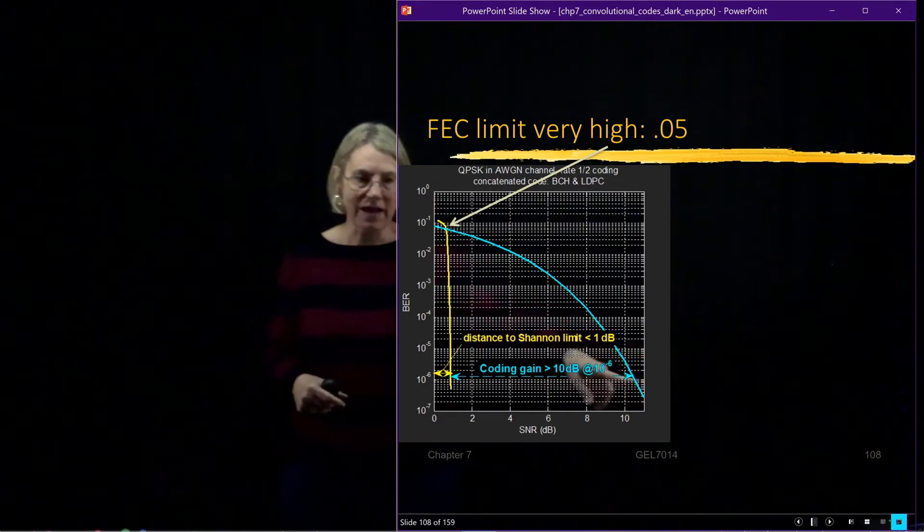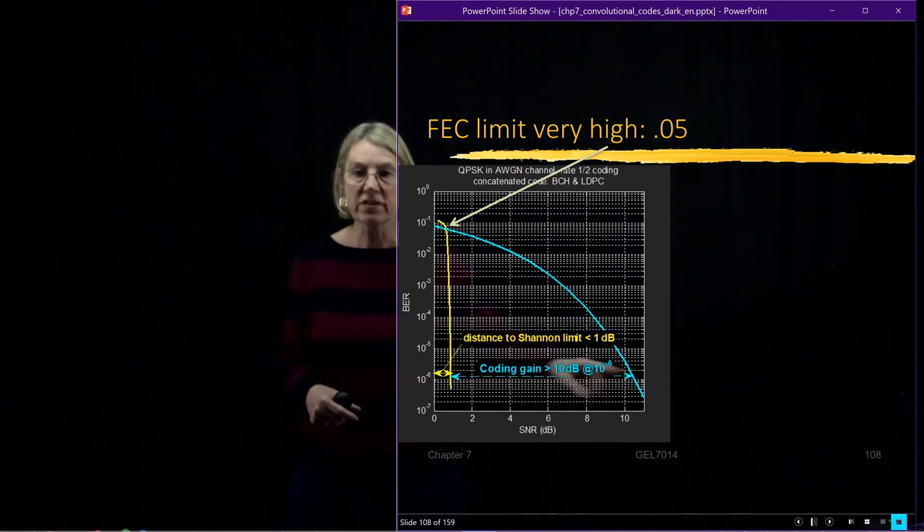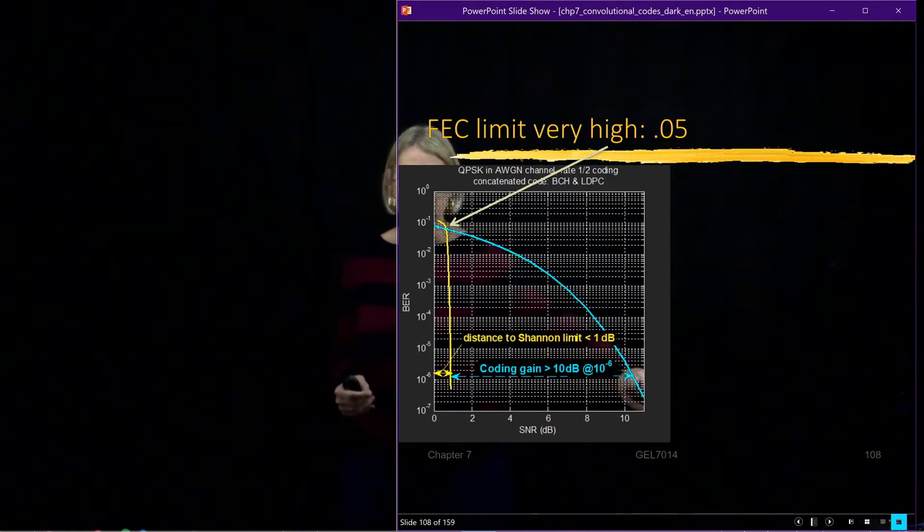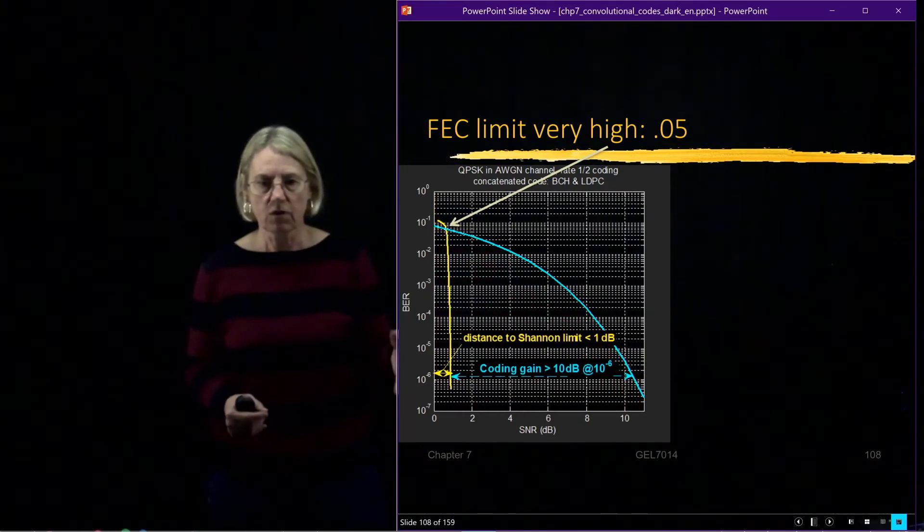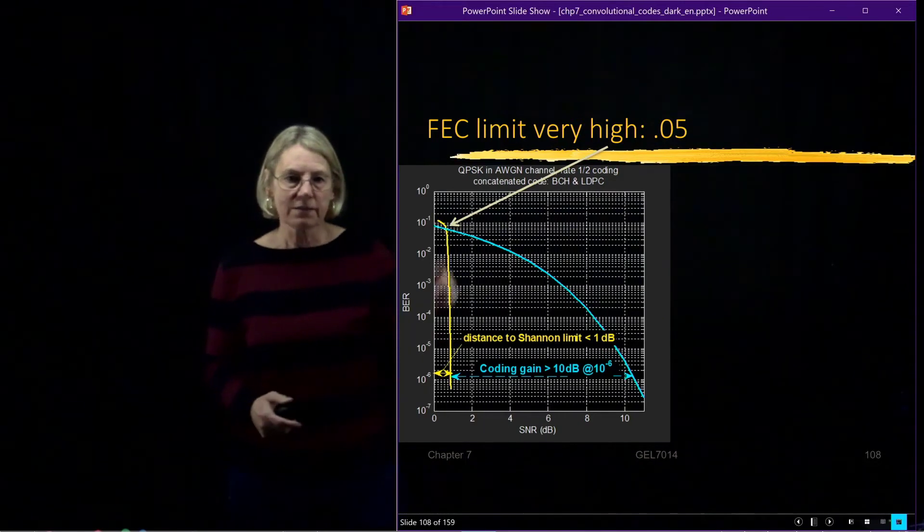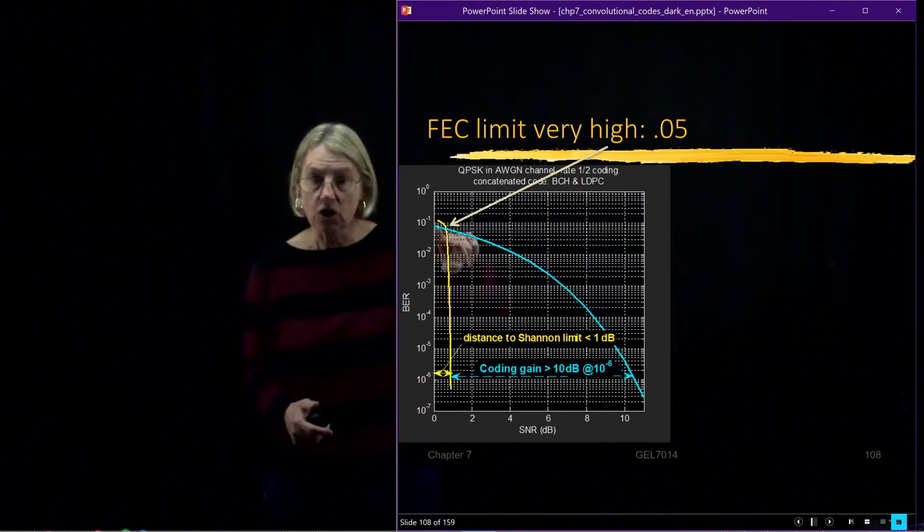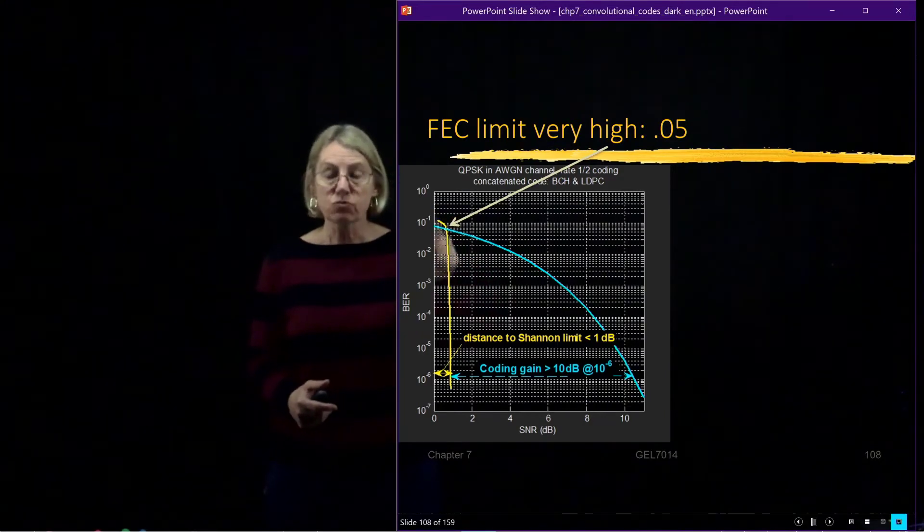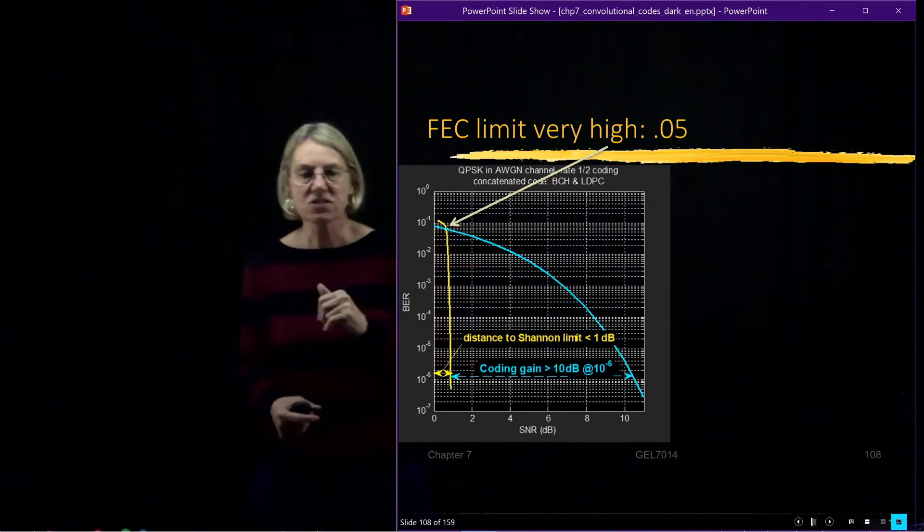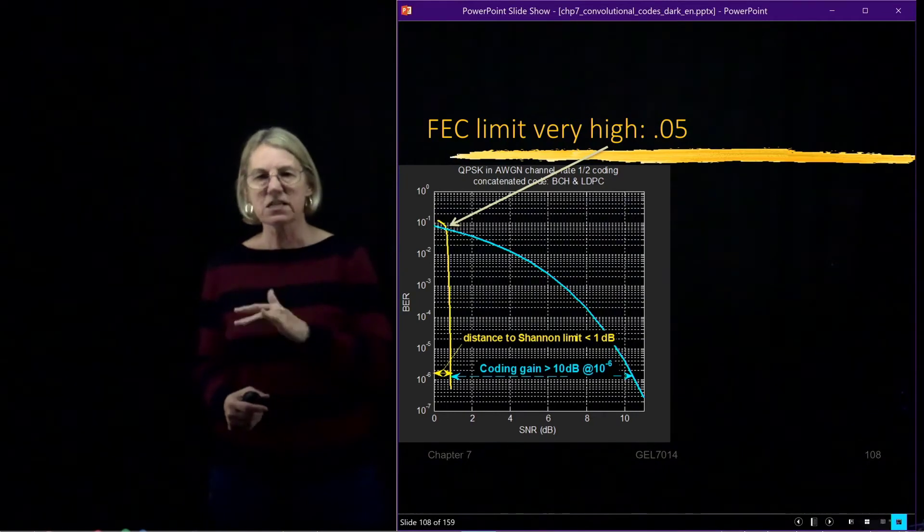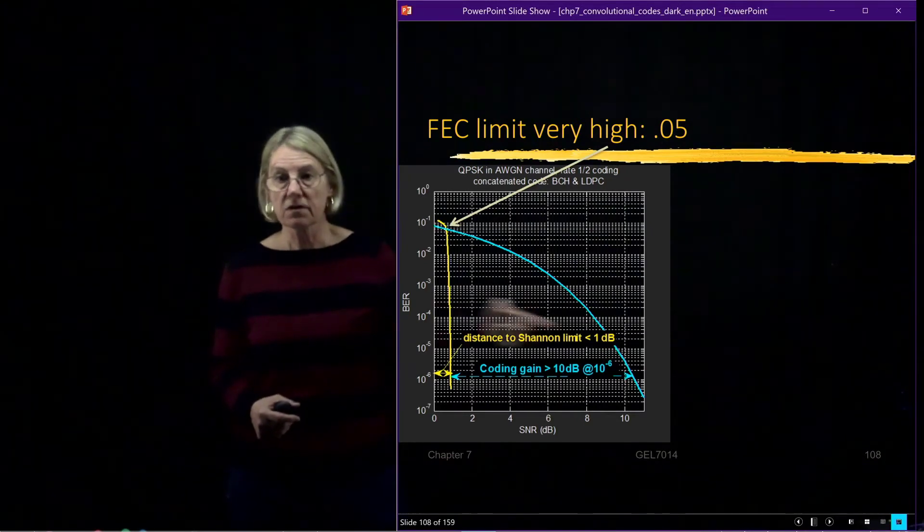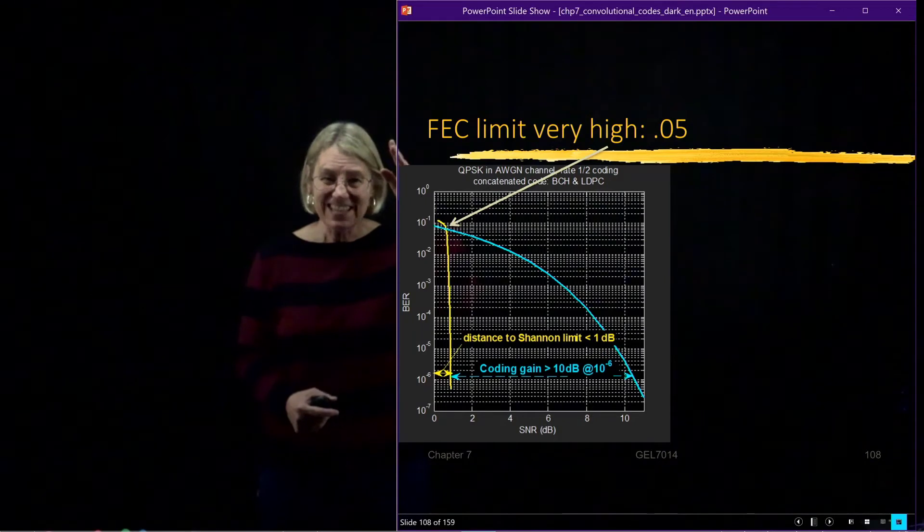If we looked at 10 to the minus 6 as our level, that would mean we were getting more than 10 dB gain from using coding. Instead of requiring something like SNR of 10 dB, we're only needing something like 1 dB to achieve that level of service. Where does this intersection occur? Remember, there's always an FEC threshold. It's really high for this code, very high performing. As long as my bit error rate is lower than 5%, as long as it's less than 1 in 20 errors, I'm going to see improvement with this code. The code is very strong.